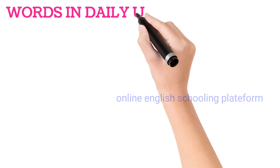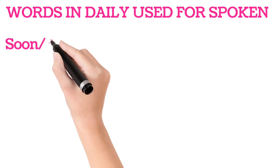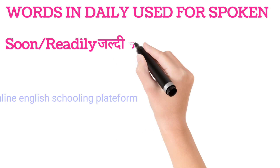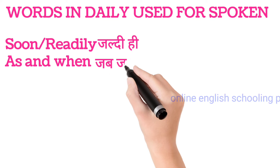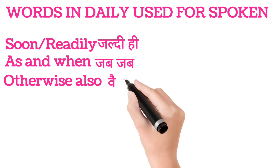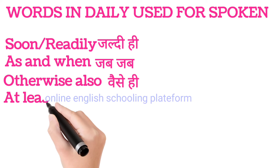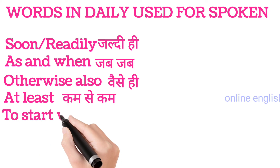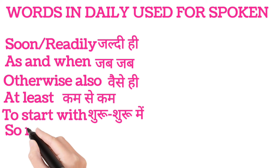Jitne words aap dekh rahe hain, yeh bahut important words hain aapke liye — bahut kaam ke words hain spoken English mein. Inhe yaad kar lijiye, raat ko bhi. Next: 'soon' or 'readily' — jaldi hi. 'As and when' — jab jab. 'Otherwise also' — waise hi. 'At least' — kam se kam. 'To start with' — shuru shuru mein.